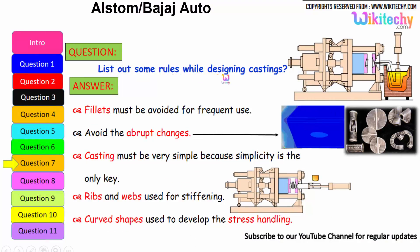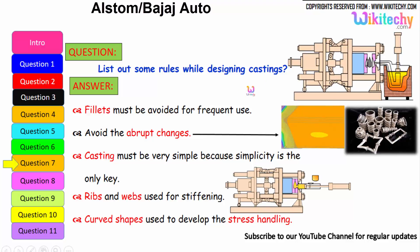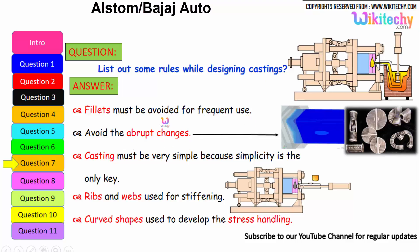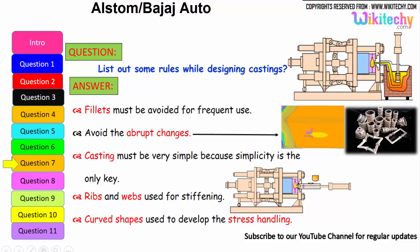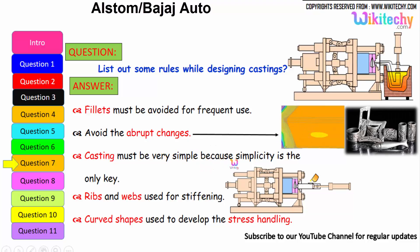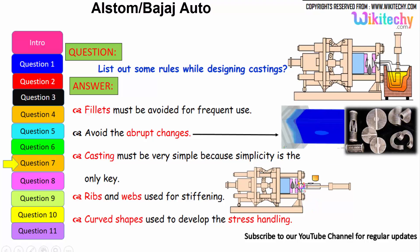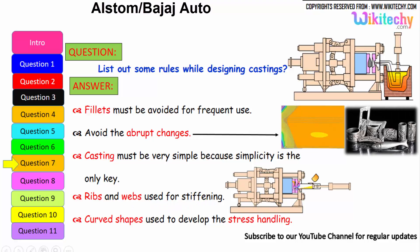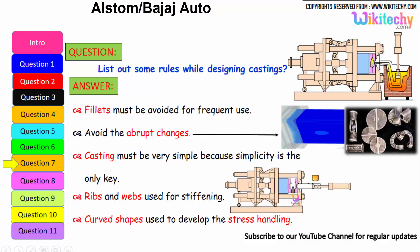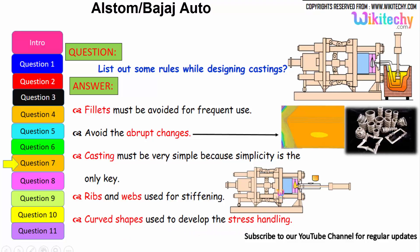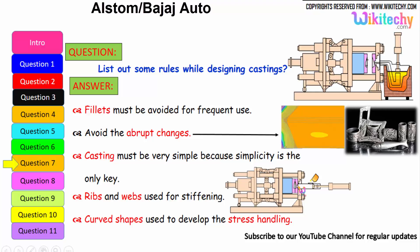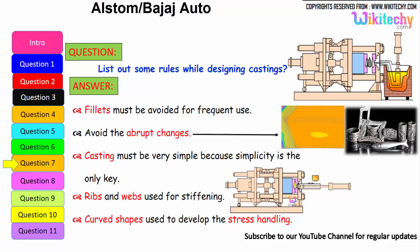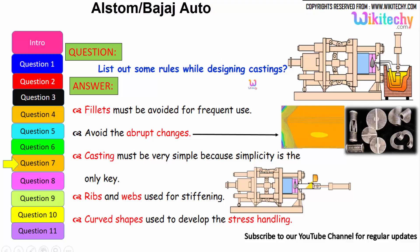Let us see some of the rules for designing castings. Fillets must be used — avoid sharp corners for frequent-use designs. Avoid abrupt changes in section. Casting design must be very simple, because simplicity is the key. Ribs and webs are used for stiffening. Curved shapes should be used to better handle stress distribution. These are the main rules to follow for castings.